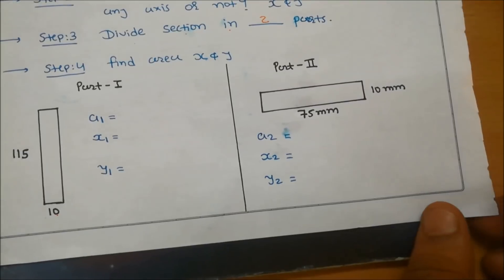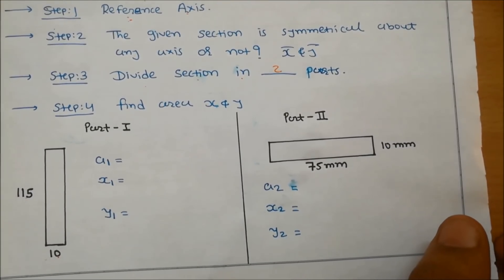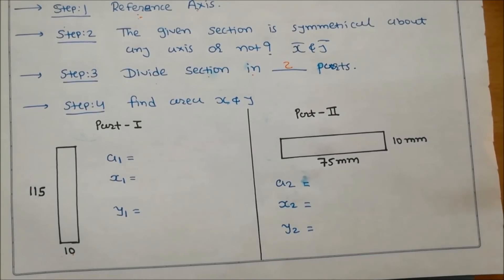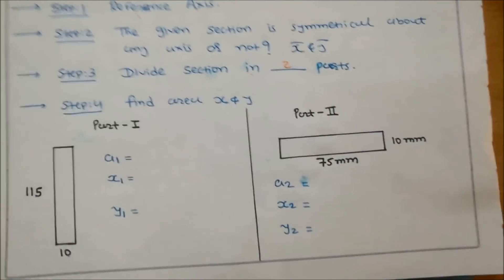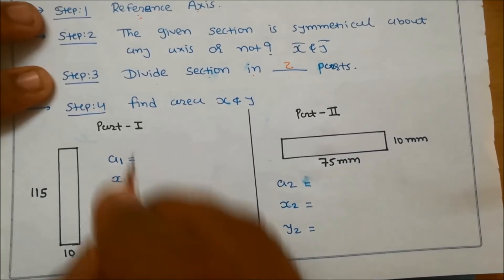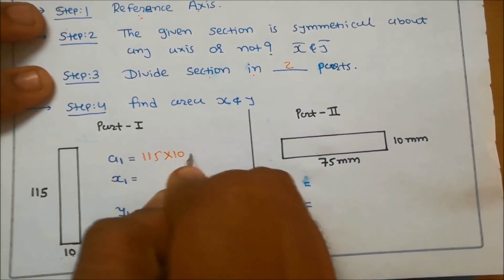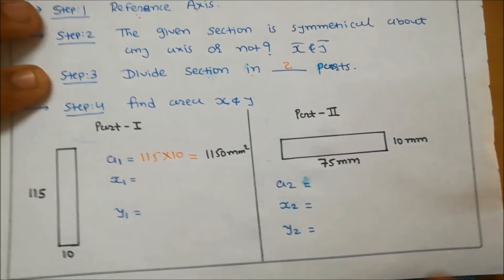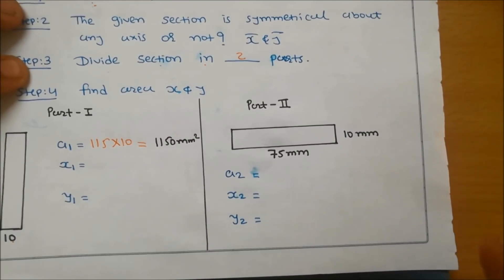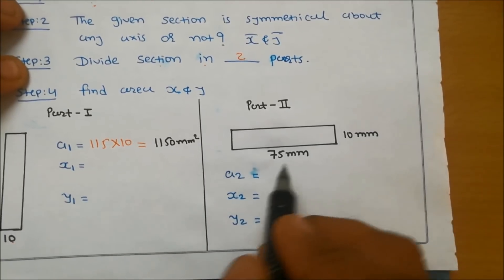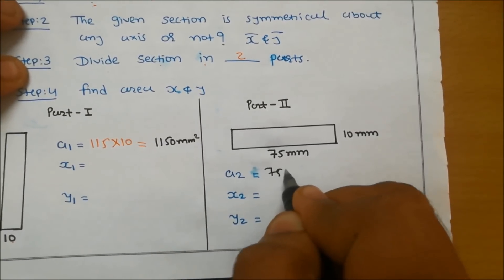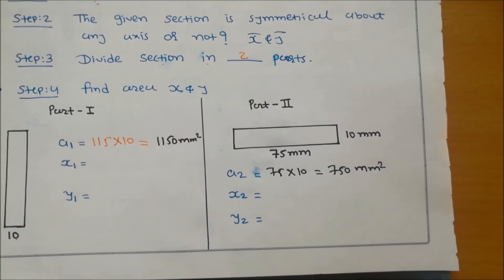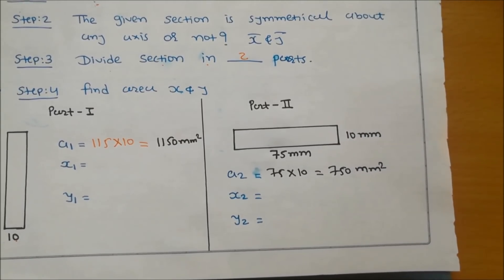In step number four, find the area, X1, Y1, X2, and Y2. The first rectangle area is L times B: 115 mm times 10 mm equals 1150 mm square. For the second part, area is 75 mm multiplied by 10 mm, giving 750 mm square.